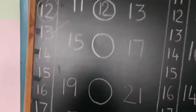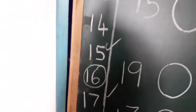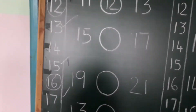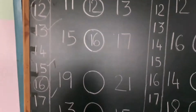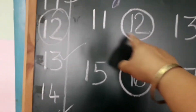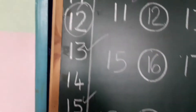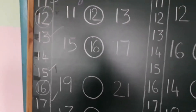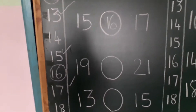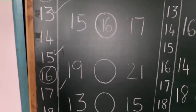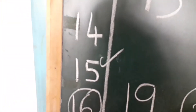Next: 15 and 17. So now look here — 15 and 17. And now 19 dash 21. So 19 ke baad kya aayega? 20. So now 20.